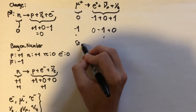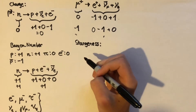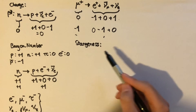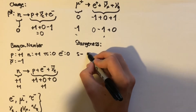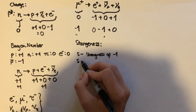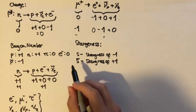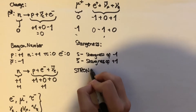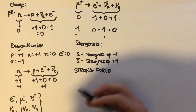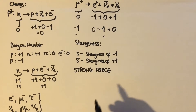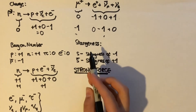The final conserved quantity is strangeness. Kaons are the particles which have strangeness because they're the only ones that contain strange quarks. The normal strange quark has a strangeness of minus one and the anti-strange quark has a strangeness of plus one. Importantly, strangeness is only conserved in reactions which involve the strong force. In a weak interaction, strangeness doesn't necessarily have to be conserved — it could be, but it's not conserved in all interactions.